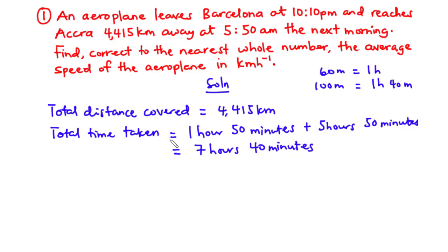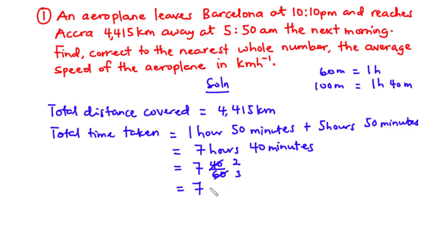So this is the total time taken by the aeroplane. We need to convert this time value entirely to hours. In fraction form, we have 7 hours and 40 minutes, divided by 60. That simplifies to 7 and 2/3. Converting this mixed number to an improper fraction: 3 times 7 is 21, plus 2 is 23, giving us 23/3 hours. So this is the total time taken.